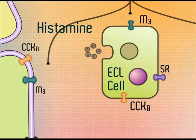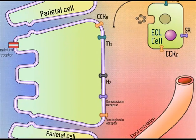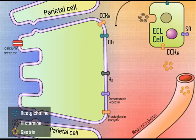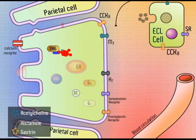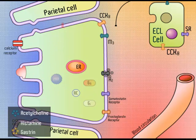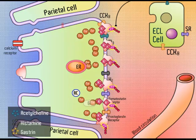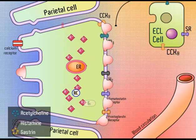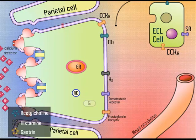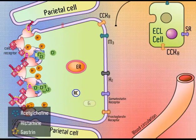Histamine is the major mediator of hydrochloric acid secretion. The parietal cell has separate receptors for the three secretagogues: acetylcholine binds to M3 muscarinic receptors, and gastrin binds to cholecystokinin-B gastrin receptors — both activating second messengers that release calcium. Histamine binds to H2 histamine receptors to increase cAMP levels. Elevated intracellular calcium and cAMP enhance HCl secretion by activating basolateral sodium-potassium ATPase pumps and inserting more hydrogen-potassium ATPase pumps and chloride channels into the apical membrane.